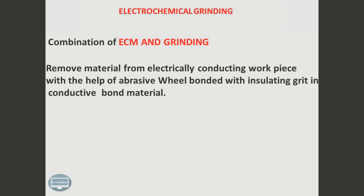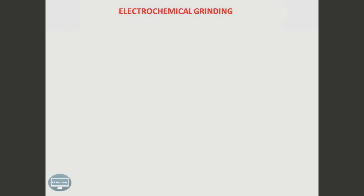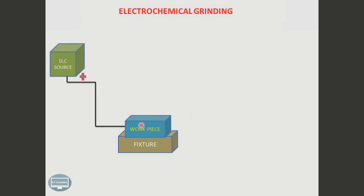First, we will discuss the parts of the electrochemical grinding. We have a fixture on which our workpiece will be placed. The workpiece is connected to the positive charge from the power supply.